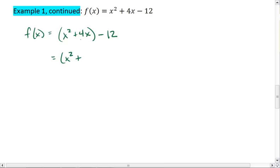To complete the square, I take that 4 divided by 2, which is 2, and square it, which is actually just 4.